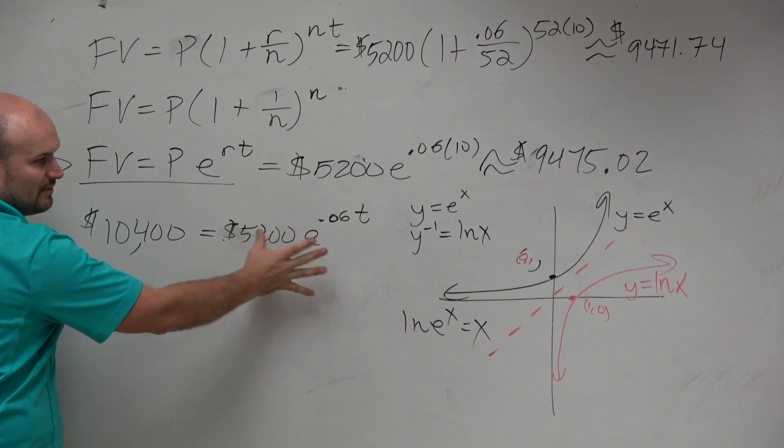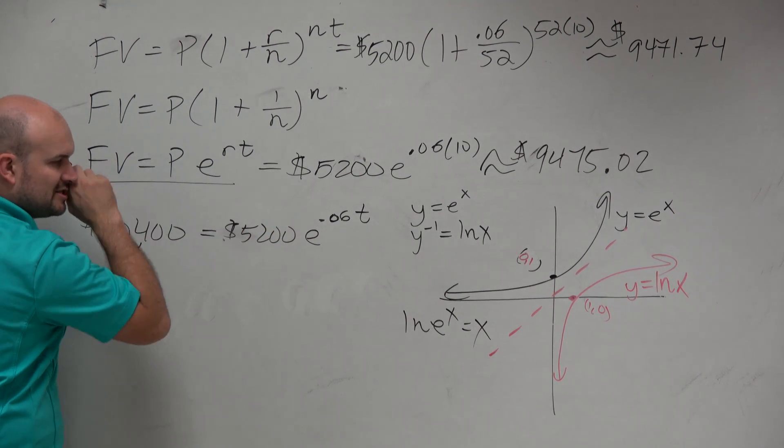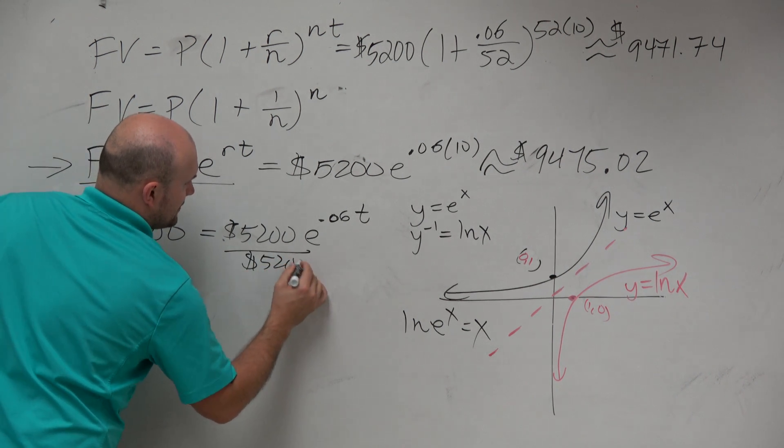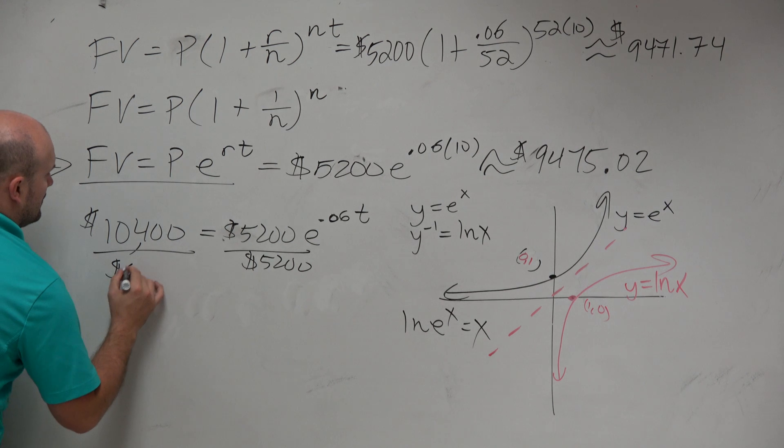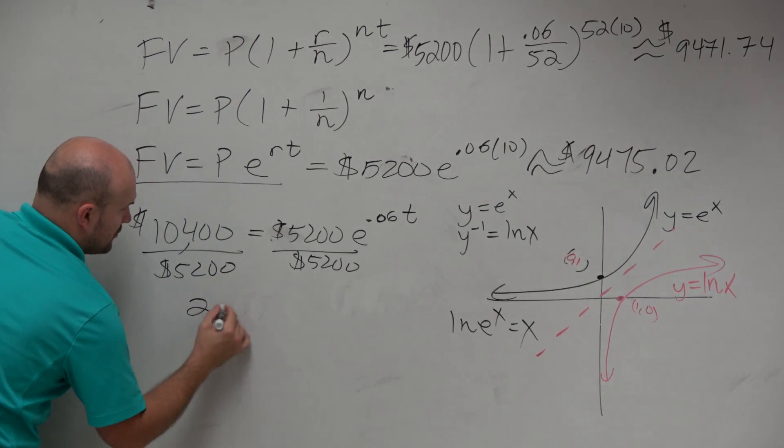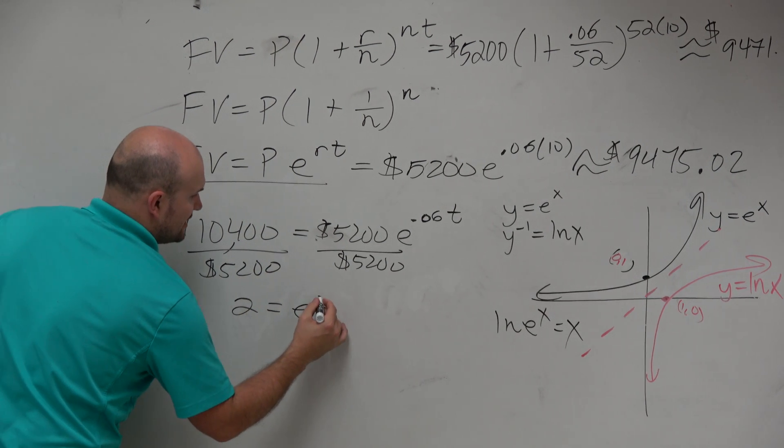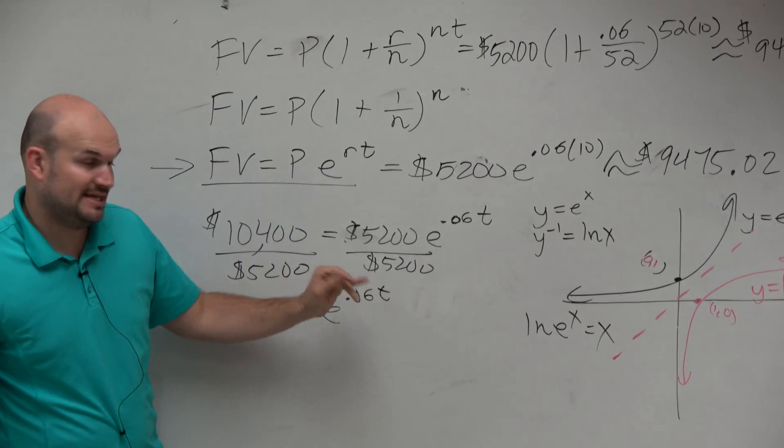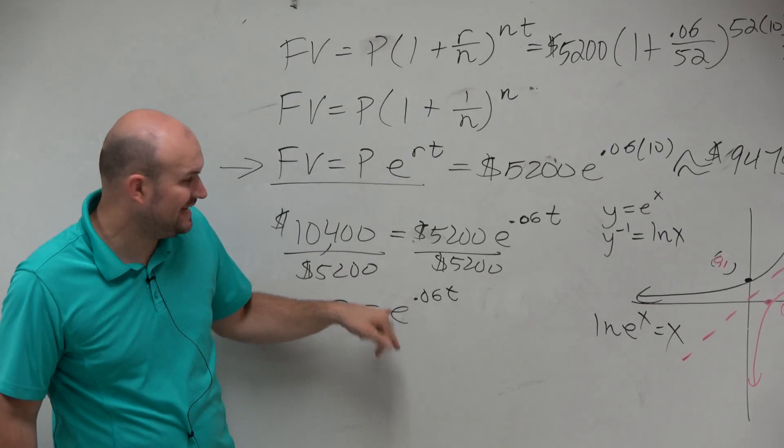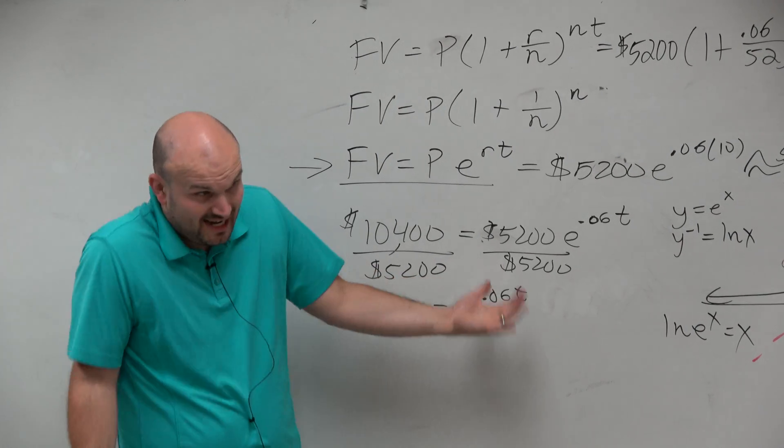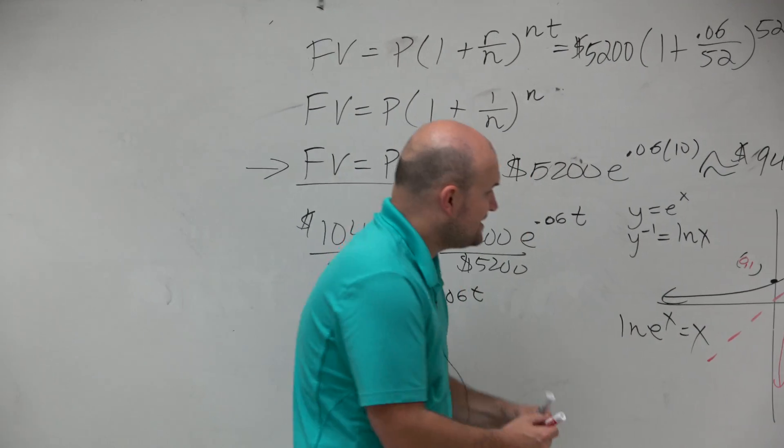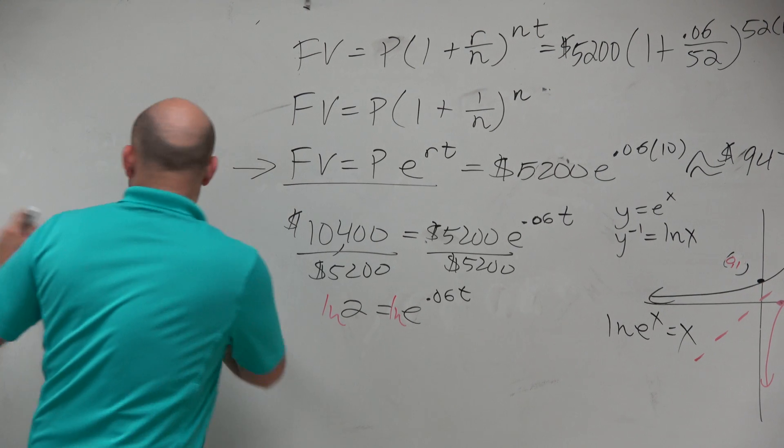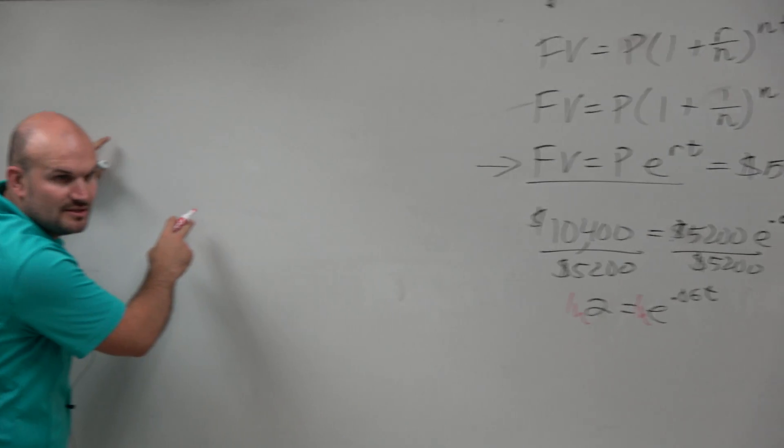The first thing we're going to want to do whenever we're solving an exponential equation, isolate the exponent. So the first thing I'll do is divide by 5,200, and I get 2 equals e to the 0.06t. Now, I'm not solving for x in this case. I'm solving for t. But I want to undo e to the 0.06 power. I've got to undo that. So to undo that, I will take the ln. Remember what I did over here, guys? What did I do? I subtracted a 3 on both sides. Correct?